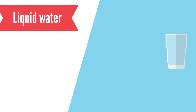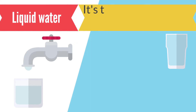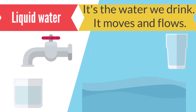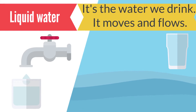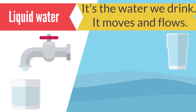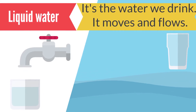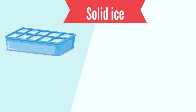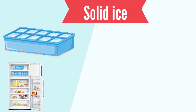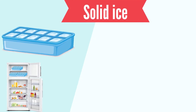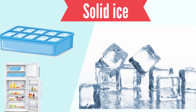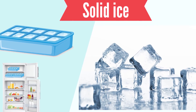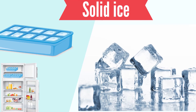So far, we have talked about the water we drink, which is the water that moves and flows, and that's called liquid. And when we put water in a very cold place, it becomes ice. Ice is the solid form of water.